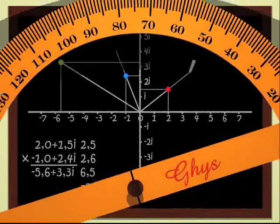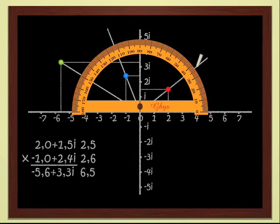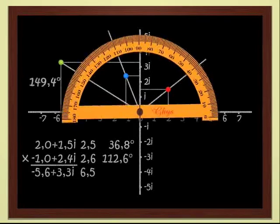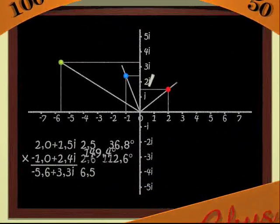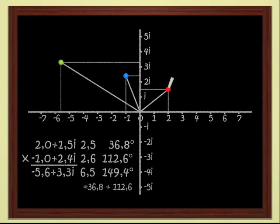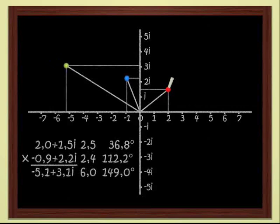The argument of a complex number is measured by the angle between the abscissa axis and the straight line joining the origin to the point. Here, for instance, the argument of the red complex number is 36.8 degrees. The argument of the blue point is 112.6 degrees. And for the product, the green point, we get 149.4 degrees. That is, the sum of the arguments of the two numbers. When we multiply two complex numbers, moduli are multiplied and arguments are added.